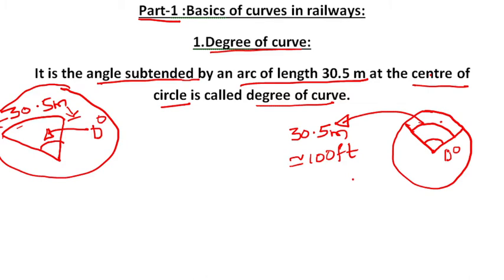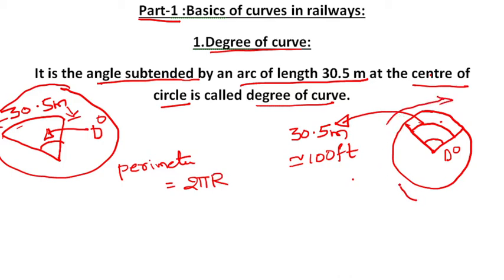Whatever angle is there, that is D degrees. Now, you know that the perimeter of a circle is 2πR, and the entire circle corresponds to 360 degrees. So this entire length 2πR is equal to 360 degrees. Now I want to find out what D degrees means — that is, for 30.5 meters of arc length, how much angle is subtended.